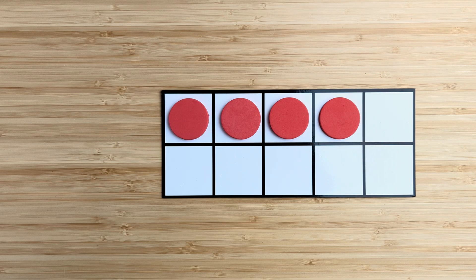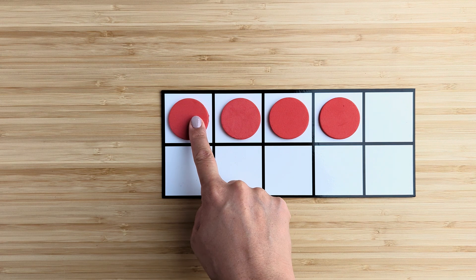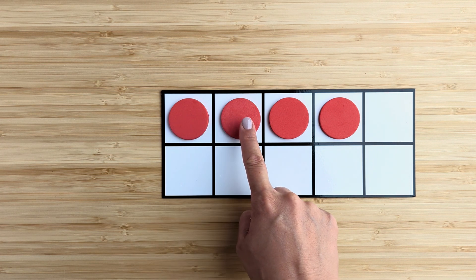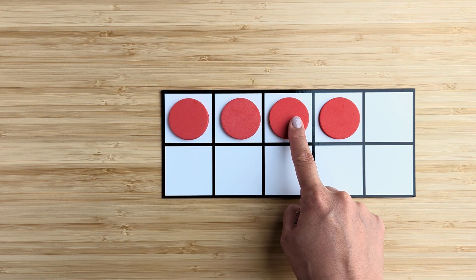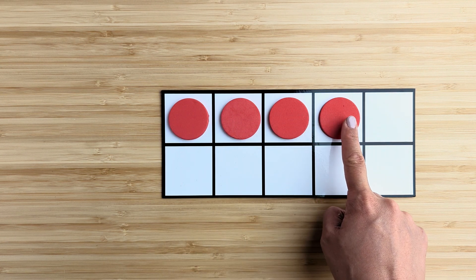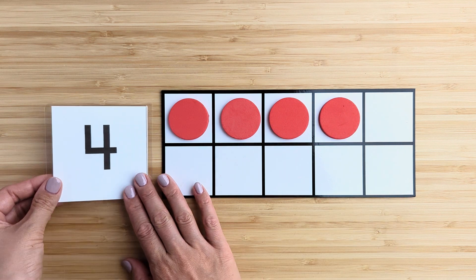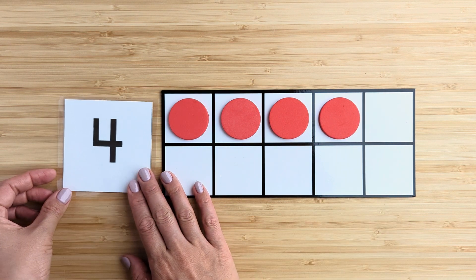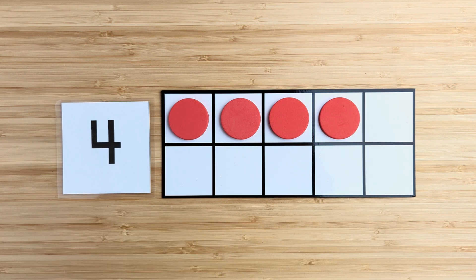How many in all? Point and count. One, two, three, four. Four. There are four red circles.